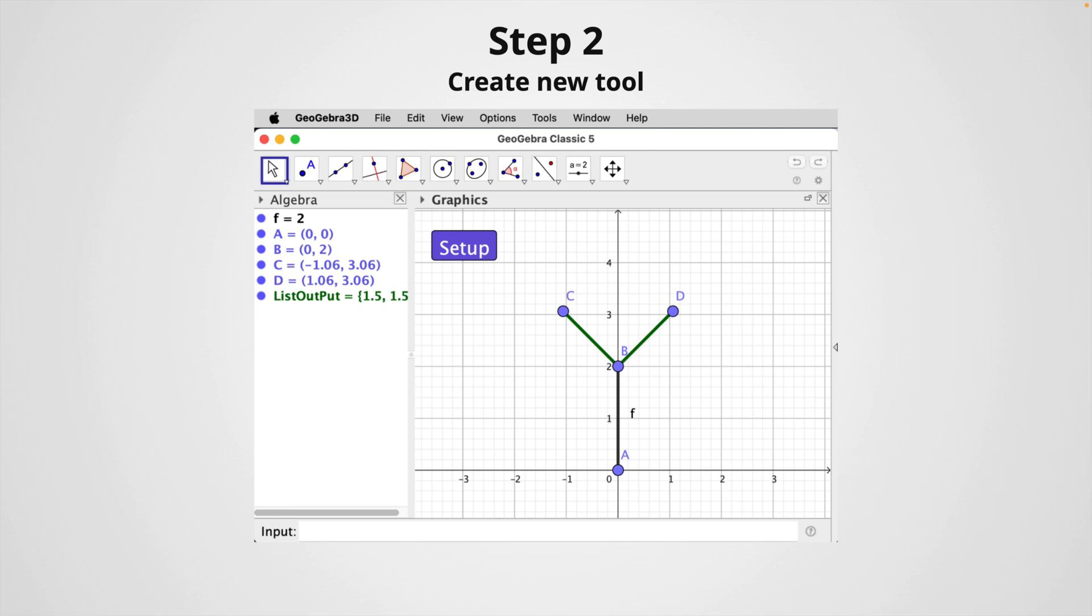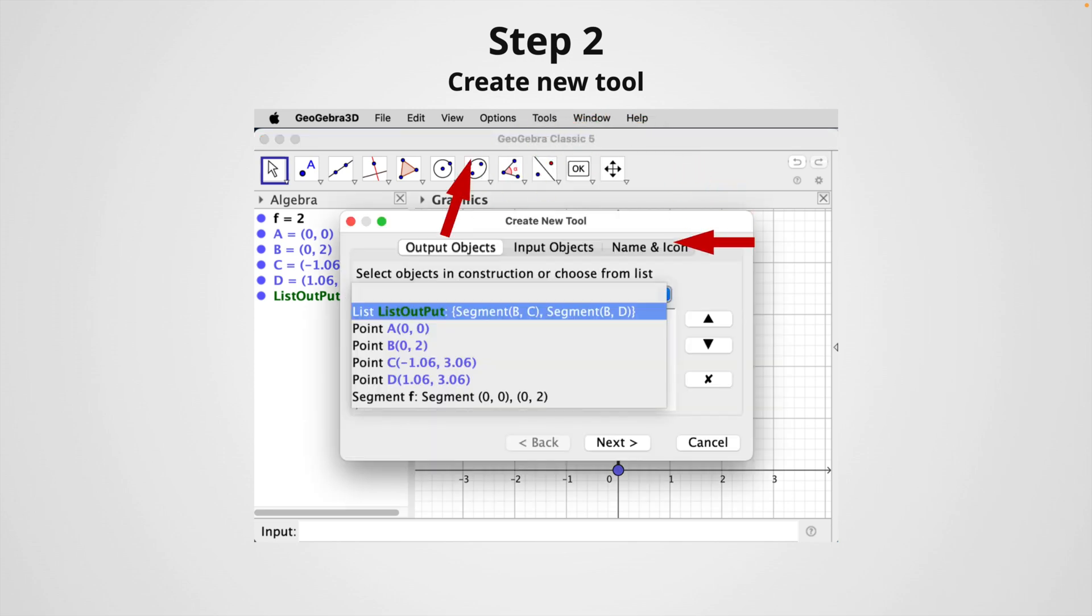So in step two, we're going to create our new tool. To create a new tool in GeoGebra, in the main menu at the top, look for Tools and click on Create a new tool. On the pop-up window, in the tab output object, select list output and then click on next.